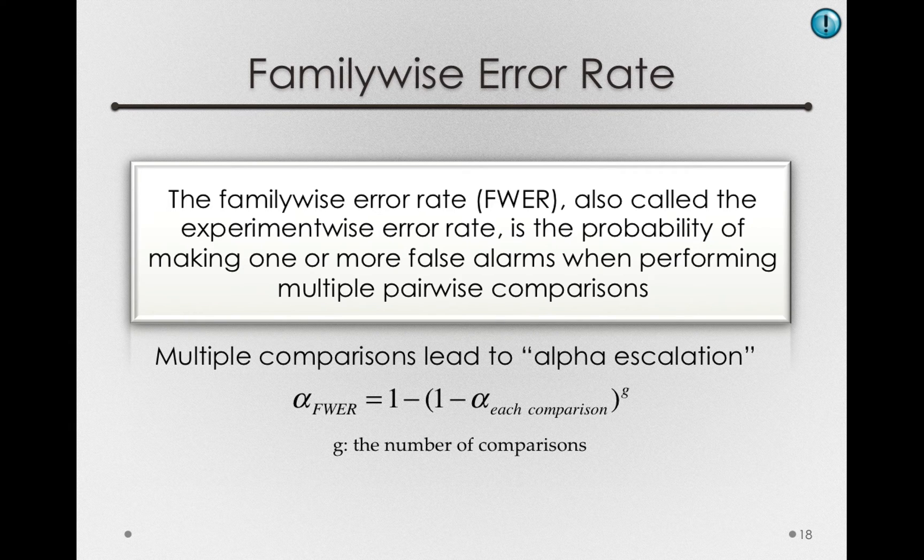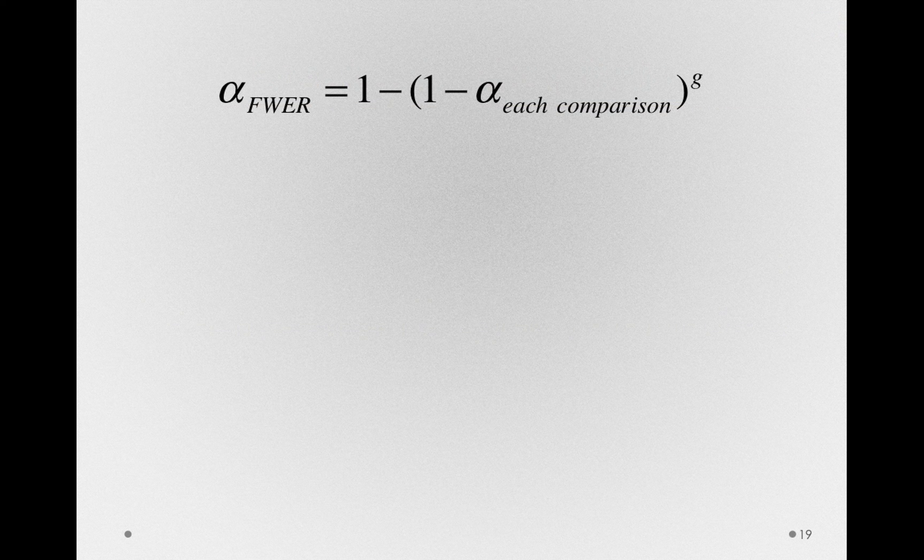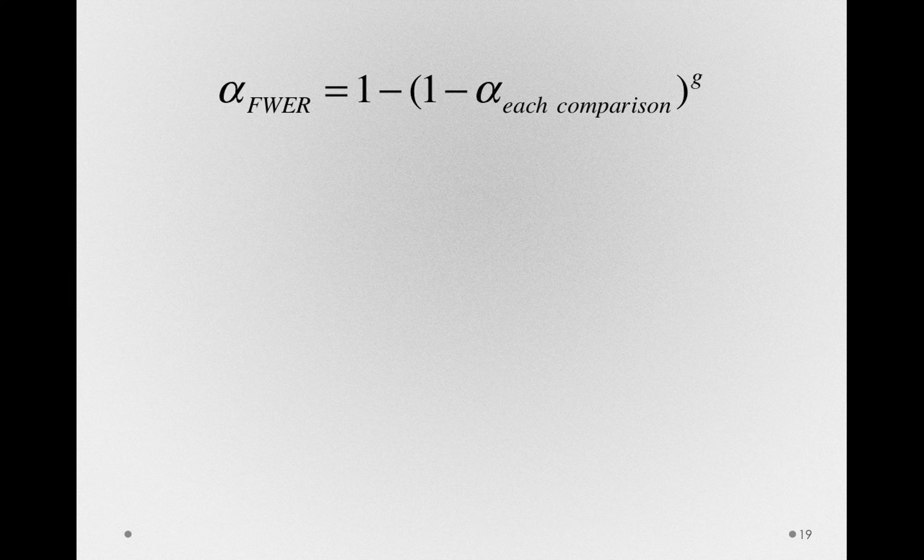Let's imagine a smaller set of comparisons, and let's see what a family-wise error rate would be. I'll put the formula at the top, and let's imagine we're making 19 comparisons.